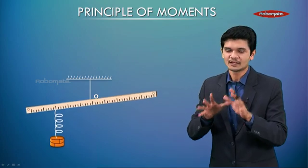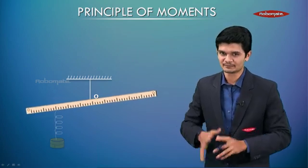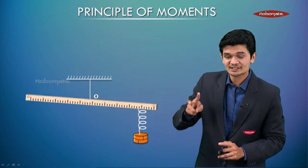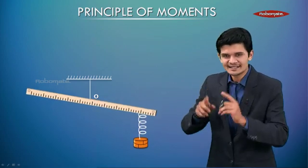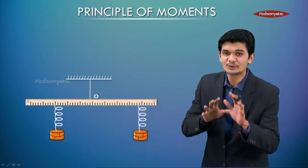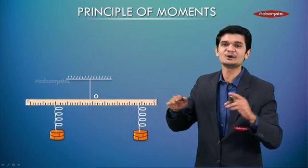Now observe carefully. Using both the weights at the same time, let's say again I have the first weight, I place it at one end, it causes it to turn clockwise. Now I take the other weight and place it at just the right position on the opposite side so that the ruler now balances itself in the horizontal position.